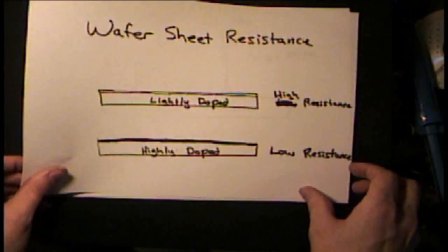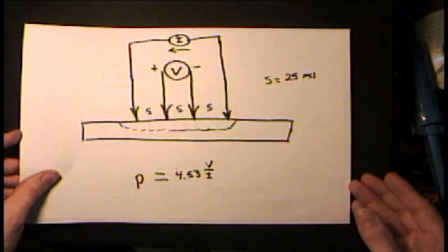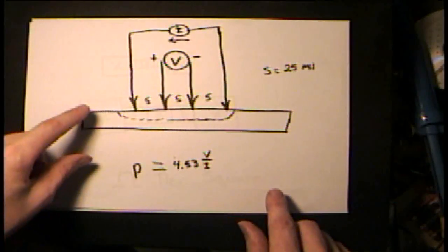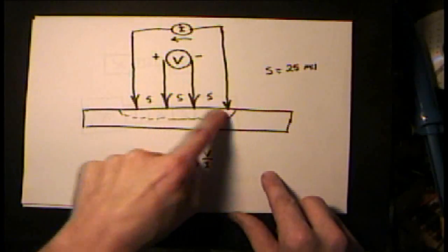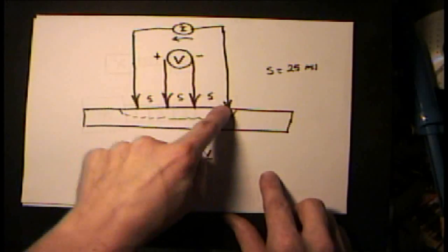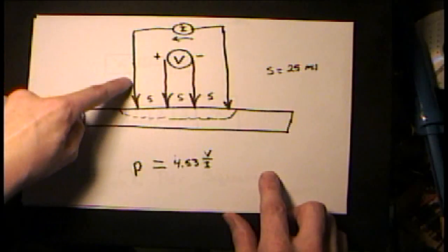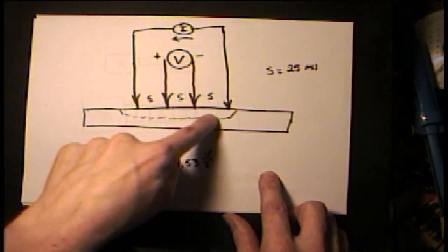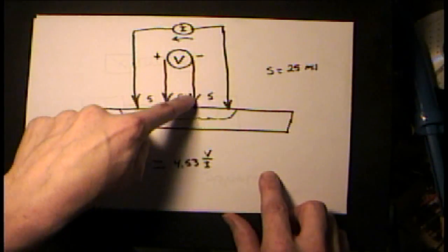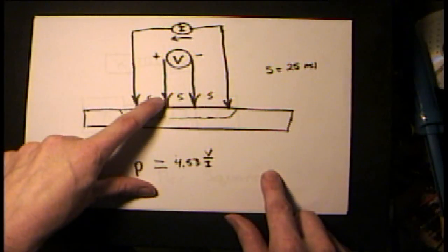It's important to know the resistance of your wafers. You can do this with a four-point probe. The way a four-point probe works is you have four probes that are evenly spaced together and press against the wafer. You have a current source applying a current that flows through the wafer, and then you have a voltmeter across the two interior probes measuring a voltage.